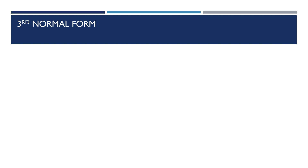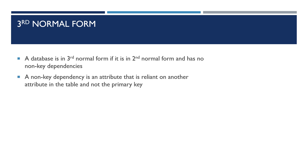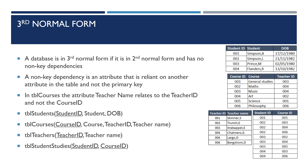A database is in third normal form if it is already in second normal form and has no non-key dependencies. A non-key dependency is an attribute that is reliant on another attribute in the table and not the primary key. In the table Courses, the attribute teacher name relates to the teacher ID and not the course ID, so this needs to be removed to its own table. We now have four tables making up our database that is now in third normal form.